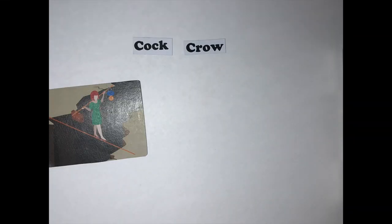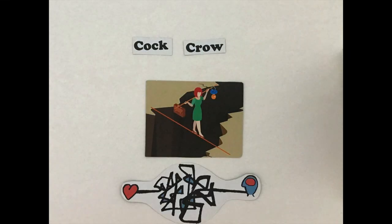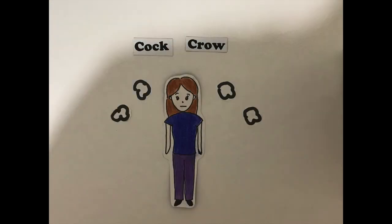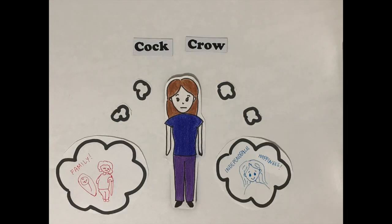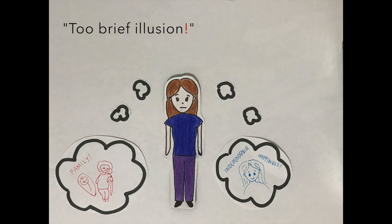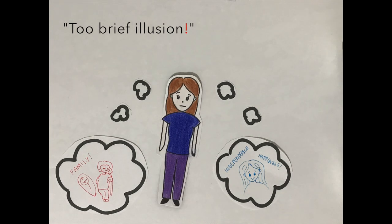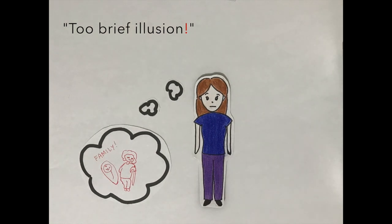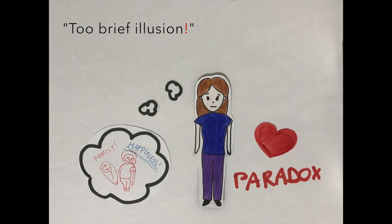Cock Crow also exemplifies the pressures of societal constructs through demonstrating the tension between the societally imposed maternal responsibilities and her desire to pursue her own passions. In Too Brief Illusion, the exclamation mark places emphasis on the illusion of freedom from maternal duties, presenting a paradox in which her discovery for her passion was supported by her initial uncertainties.